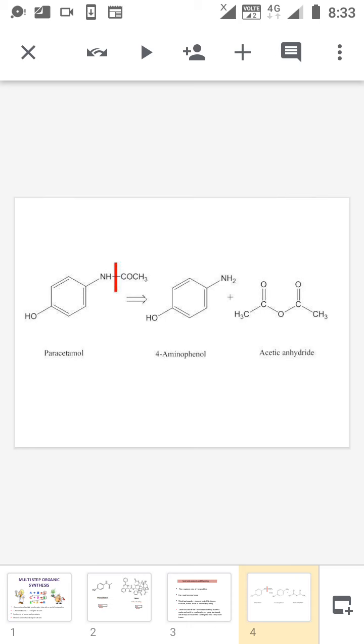If we are disconnecting the amide linkage, we will get 4-aminophenol and acetic anhydride. So the starting materials for the preparation of paracetamol are 4-aminophenol and acetic anhydride. If you are doing the same reaction in the backward direction, that is the synthesis of paracetamol. So we can write it as 4-aminophenol plus acetic anhydride gives paracetamol.